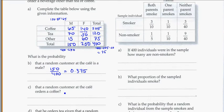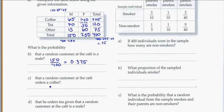What's the probability a random customer orders coffee from the cafe? So here I've got 205 people who ordered coffee total. 205 out of 400. That's going to give you 0.513.